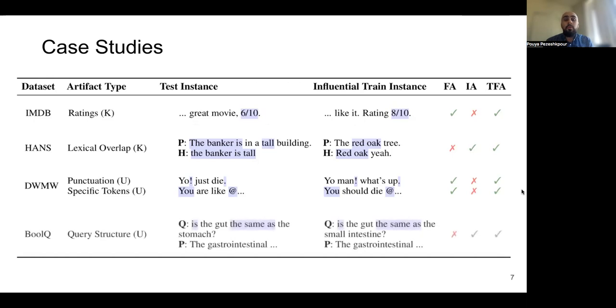We then look into BoolQ task, which is the task of giving a passage from Wikipedia and a question. The goal is to figuring out if the answer to question is true or false. And in this benchmark, we discovered that model rely on query structure to make his prediction. We use instance attribution and training feature attribution to discover these artifacts.